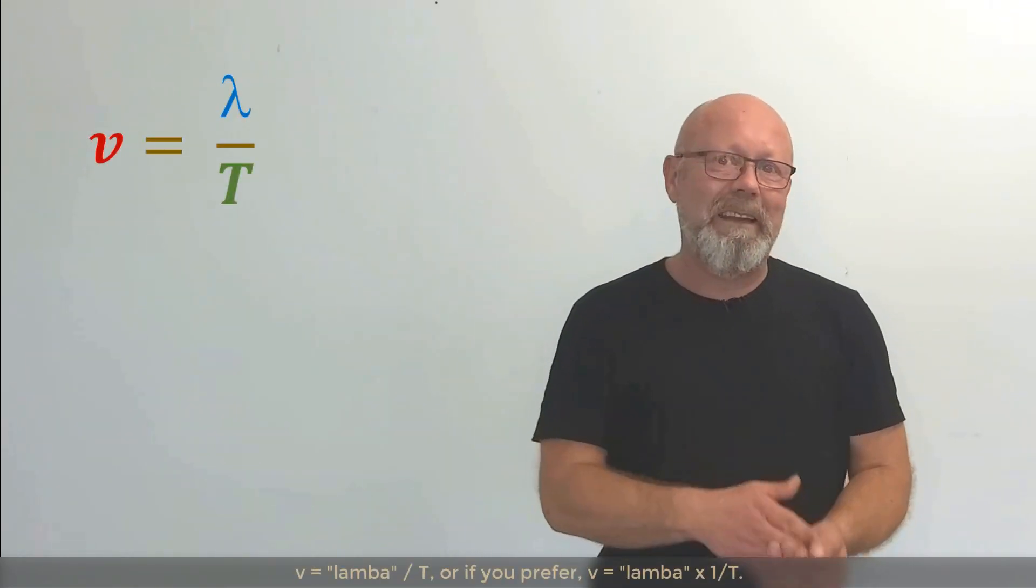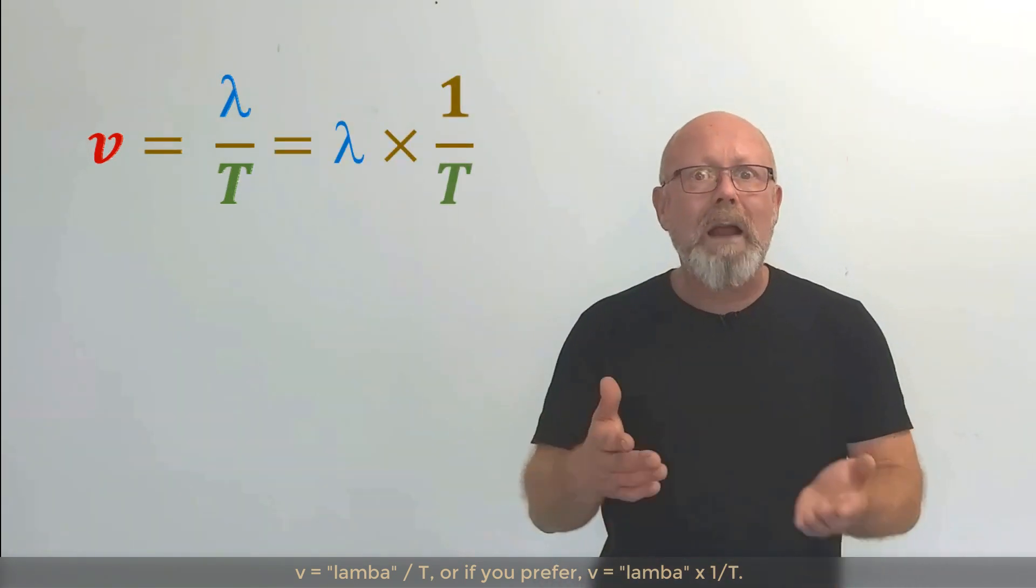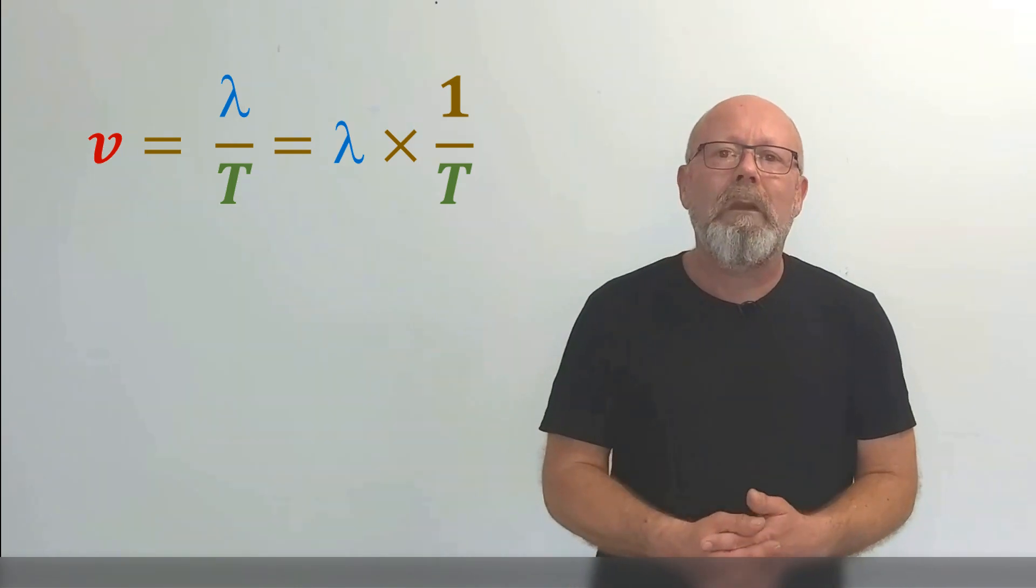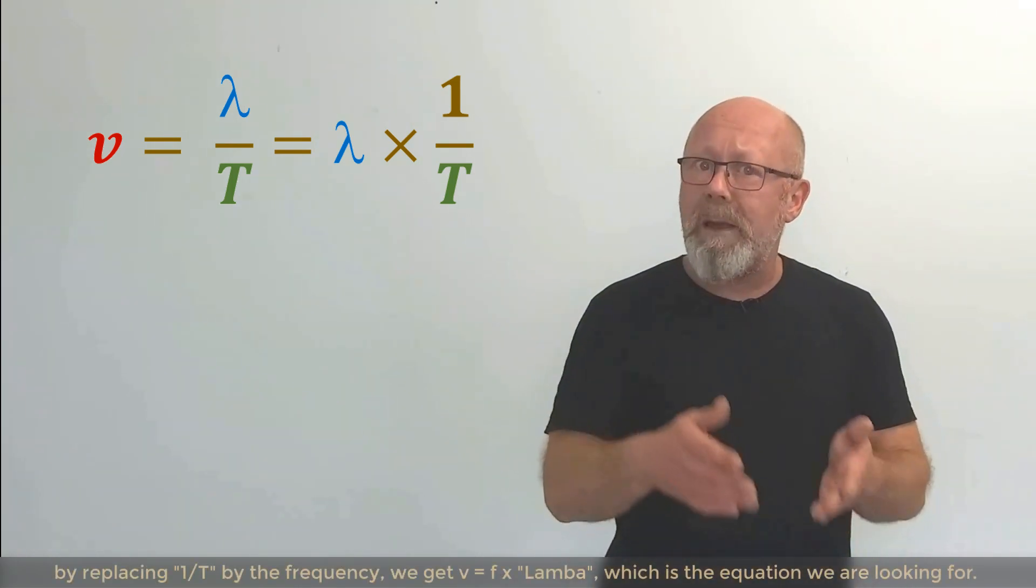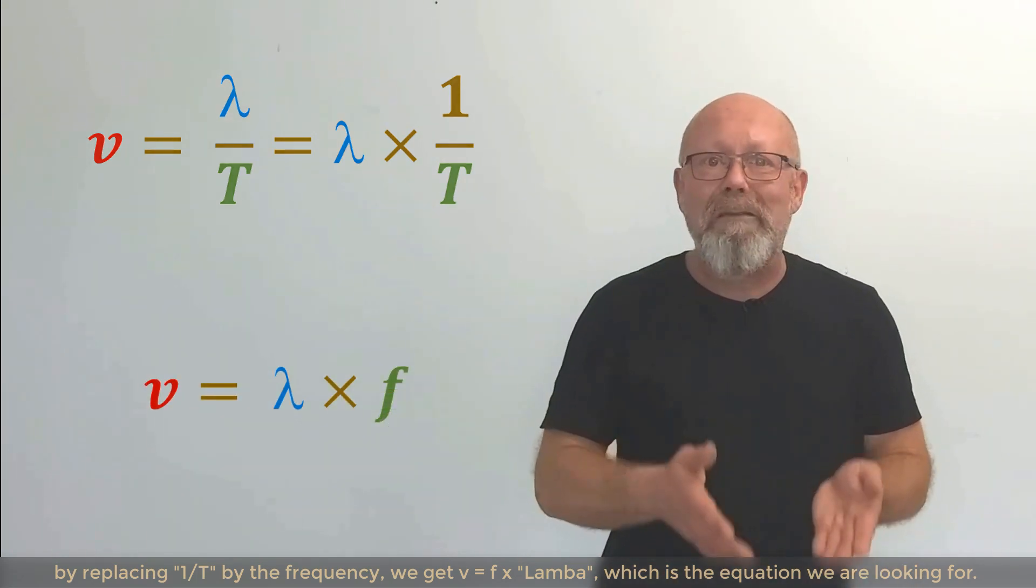V equals lambda over big T. Or if you prefer, V equals lambda multiplied by one over big T. It's basically the same thing. By replacing one over big T with the frequency, we get V equals F multiplied by lambda.